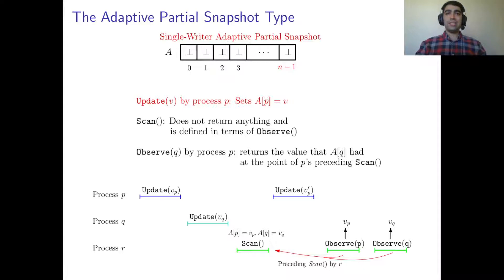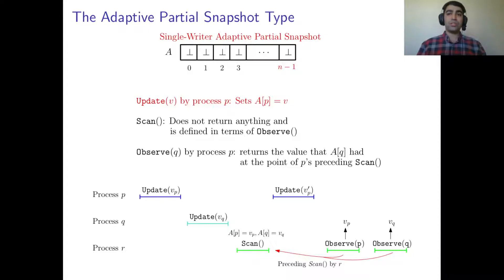The figure below is an example execution of a single-writer adaptive partial snapshot object. In this execution, process p first updates its component to v_p, then process q updates its component to v_q, and after that process r performs a scan operation. After the scan, process p performs another update and changes its value to v'_p, and then process r performs observe(p) and observe(q) consecutively. Since the values of the pth and qth components at the point in time of the preceding scan are v_p and v_q respectively, observe(p) returns v_p and observe(q) returns v_q.